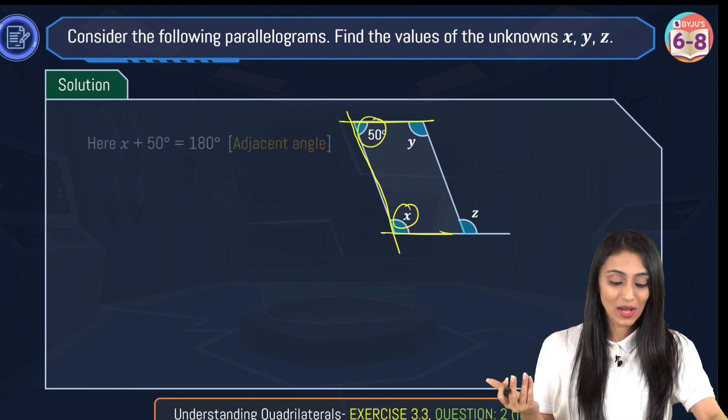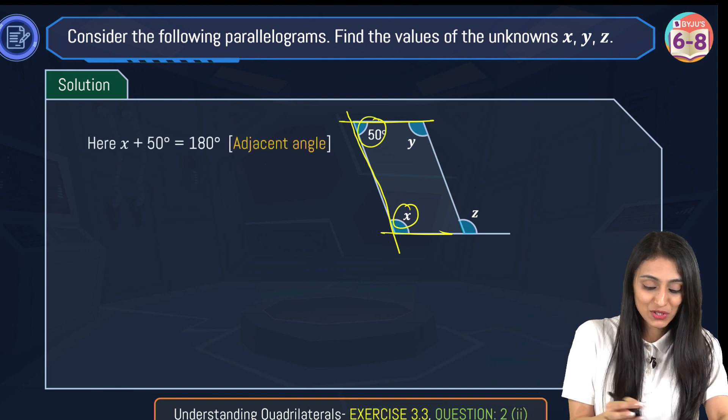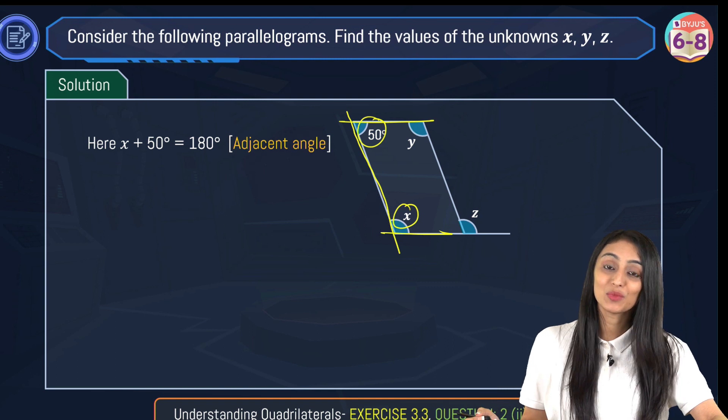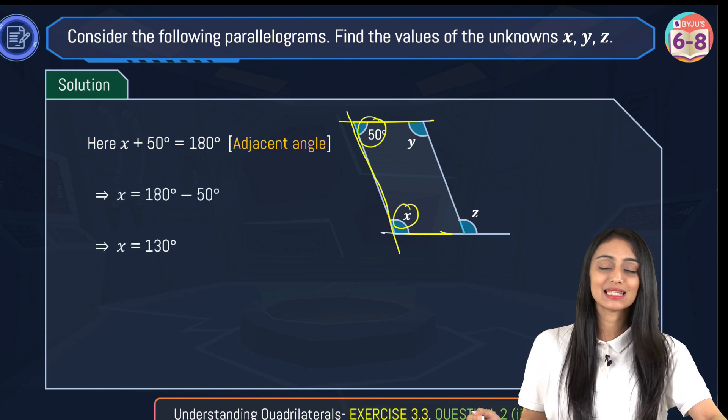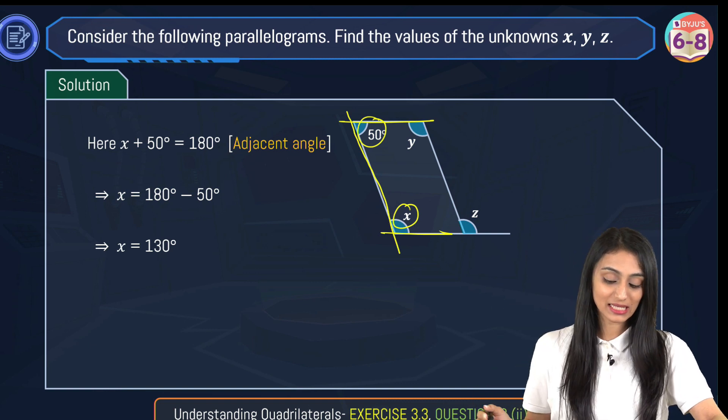So their sum would be 180 degrees. They would be supplementary. So x plus 50 degrees equals 180 degrees. So x equals 180 degrees minus 50 degrees, that's 130 degrees. So we have the value of x.